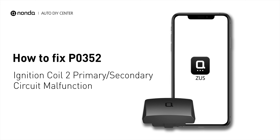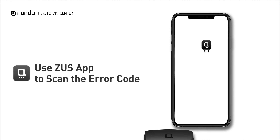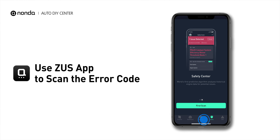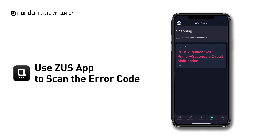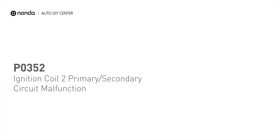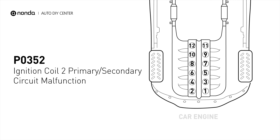If you are getting a P0352 error code, this video is going to show you one practical solution to fix the error code at home. Use the Zeus app to scan your vehicle and see the error code P0352. It indicates that the powertrain control module has detected a malfunction in the circuit of the engine's ignition coil at cylinder number 2.